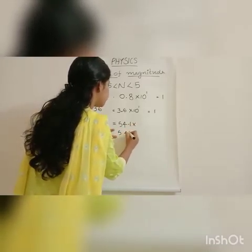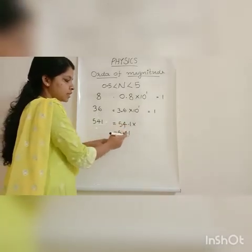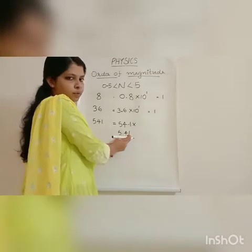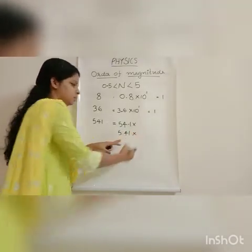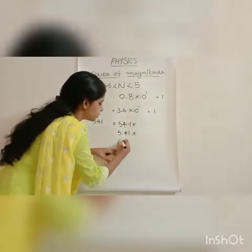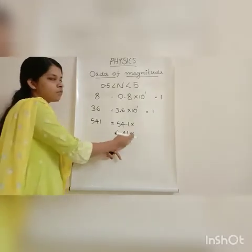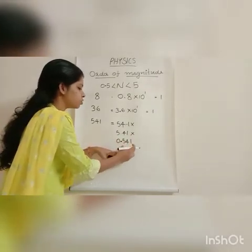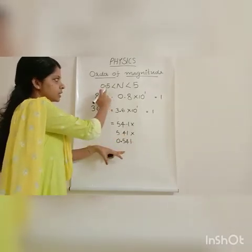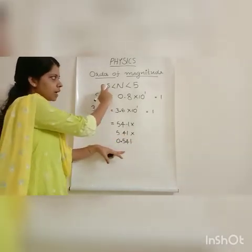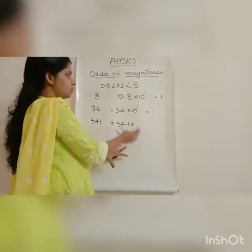We place the decimal point after two digits to get 5.41. But 5.41 is still greater than 5. So we place the decimal after three digits to get 0.541. The magnitude 0.541 is greater than 0.5 and less than 5, so the condition is satisfied.